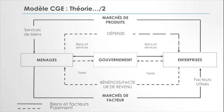Les ménages fournissent les facteurs de production, et en contrepartie ils reçoivent leur salaire, leur revenu des facteurs de production fournis. Les entreprises qui les recrutent utilisent les facteurs de production et payent les salaires et les taxes. La relation entre les ménages et les entreprises est simple : j'ai fourni des facteurs de production et en contrepartie on me paye mon salaire.